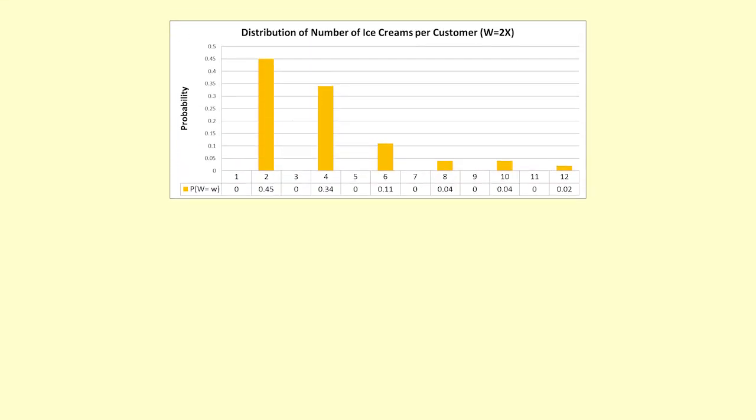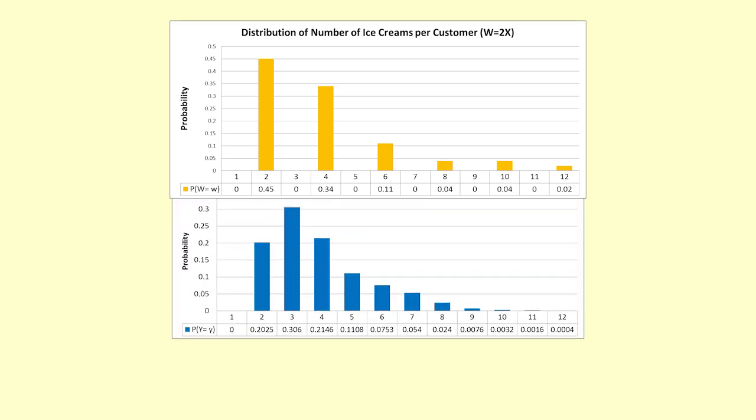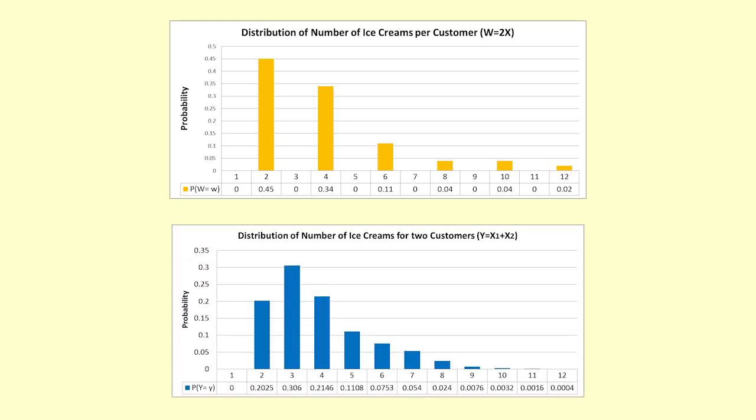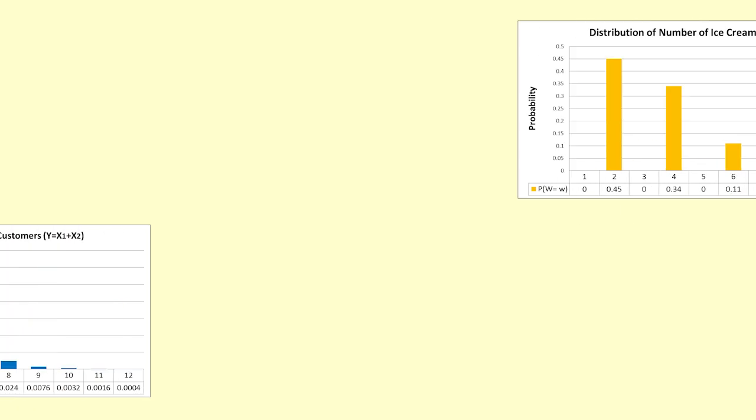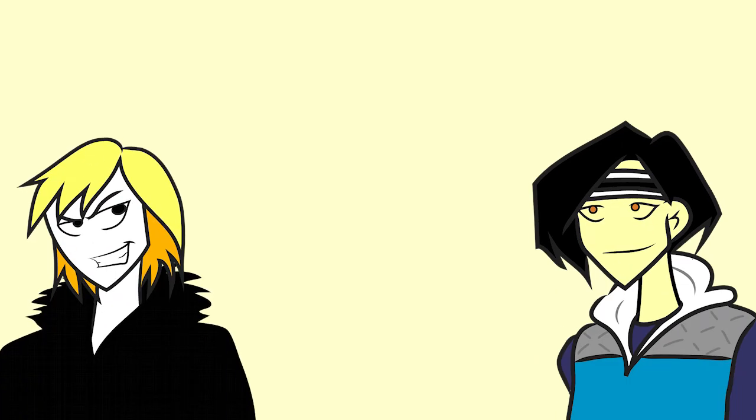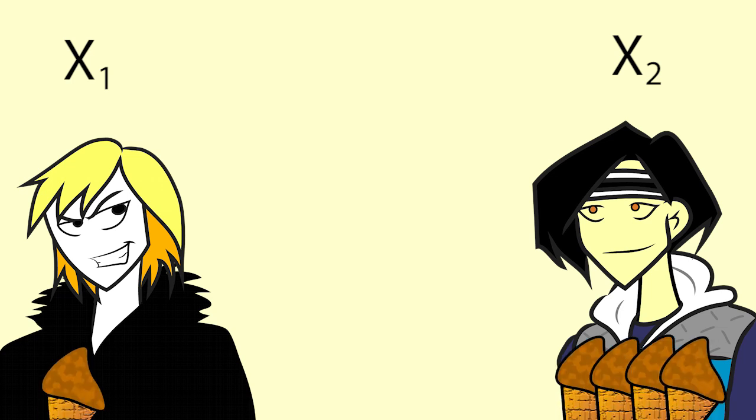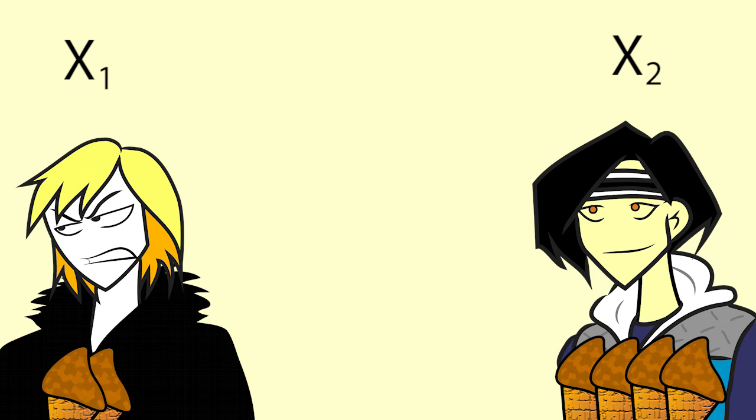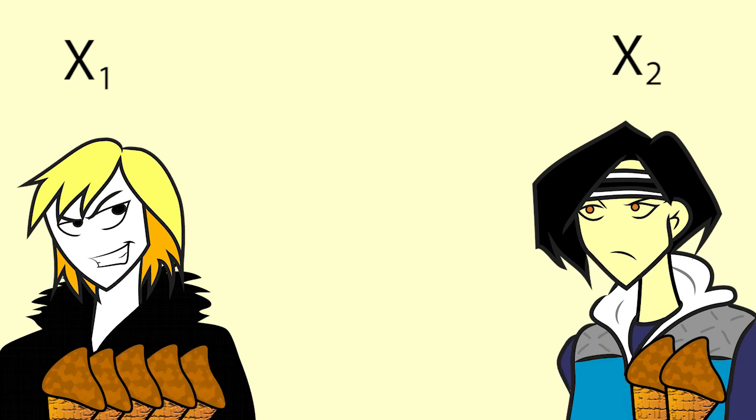We can see that the spread is greater for this distribution than it was for y equals x1 plus x2, even though the expected values are the same. We are more likely to get values further from the mean than we did with the distribution for two customers. One way to think about it is that when the two independent random variables x1 and x2 were added, it was possible for a high value in one to be balanced out by a low value in the other. This meant that the overall spread was less than simply multiplying the possible values by 2.